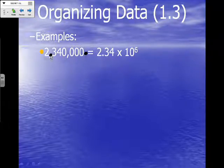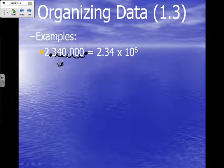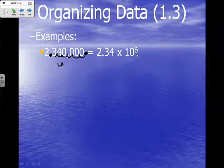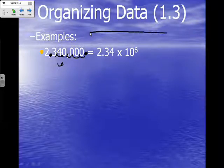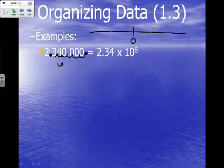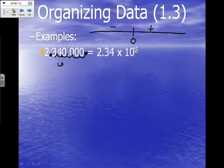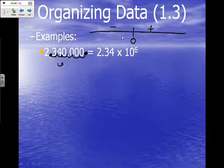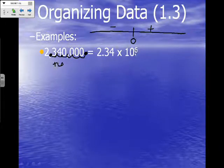We count from our new decimal to our old decimal: one, two, three, four, five, six — so this has six jumps. The number of jumps tells us our exponent — which power of ten we're going to. To determine if the exponent is positive or negative, think of a number line: positive numbers are on the right, negative on the left. We moved right from new to old decimal, so we have a positive six — written as times ten to the sixth.